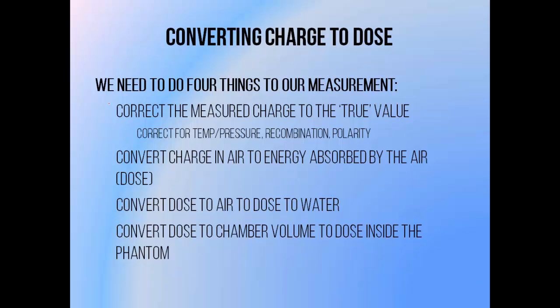Getting a measurement of dose to a point in water from an ionization chamber charge reading requires a few steps. The first is to correct the measured charge to a value that more closely reflects the amount of radiation hitting the chamber.